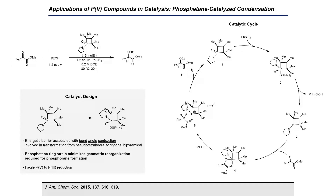The distinct reactivity of phosphacycles has inspired many applications of these compounds as catalysts. Aminophosphatanes have been reported to catalyze the deoxygenative condensation of alpha-keto esters and carboxylic acids. In the proposed mechanism, aminophosphatane catalyst 1 reacts with phenylsilane to form a pentacoordinate intermediate 2. Elimination of silanol affords reduced phosphorus intermediate 3, which reacts with the alpha-keto ester to form phosphorane intermediate 4. Reaction with benzoic acid affords intermediate 5, which can react with benzoate to form product 6 and regenerate the catalyst. The authors propose that reaction of the catalyst with phenylsilane to form pentacoordinate intermediate 2 is the selectivity-determining step, and that ring strain of the phosphatane minimizes the geometric reorganization required for phosphorane formation, thereby increasing the reaction rate.